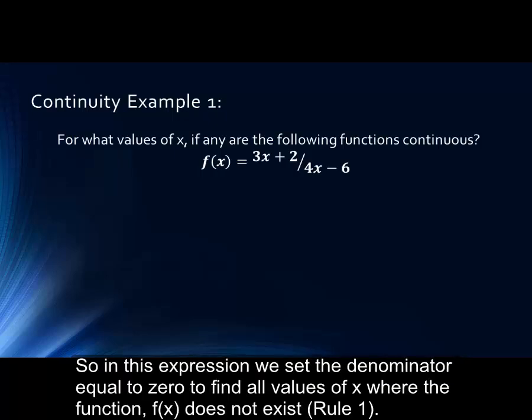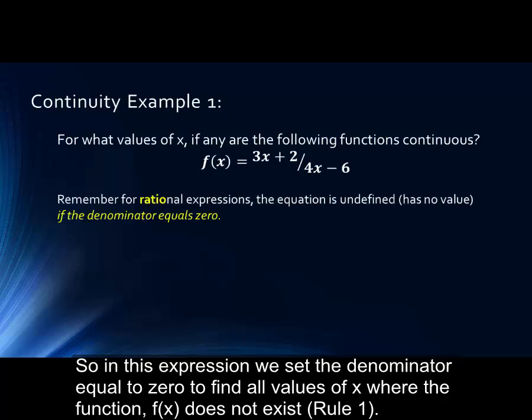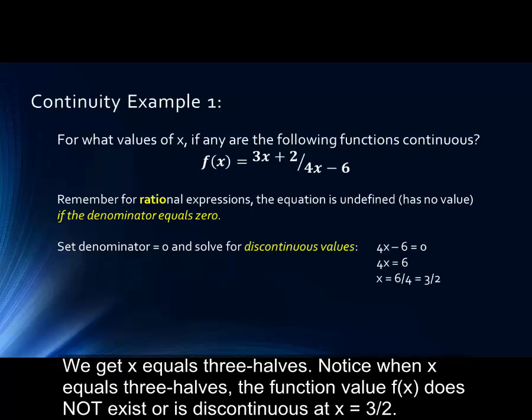So in this expression we set the denominator equal to zero to find all values of x where the function f(x) does not exist. This would be rule one. Notice when we do this and solve algebraically, we get x equals three halves.